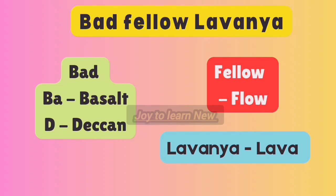The second shortcut is 'Bad Fellow Lavanya'. Here B.A. represents Basalt and D represents Deccan — Black Soil is typically found in the Basalt region, Deccan Trap. Then take the word 'Lavanya': L.A.V.A. represents Lava, and 'Fellow' sounds like Flow. So it is made up of Lava Flows. Black Soil is found in the Basalt region of the Deccan Trap and is made up of Lava Flows.